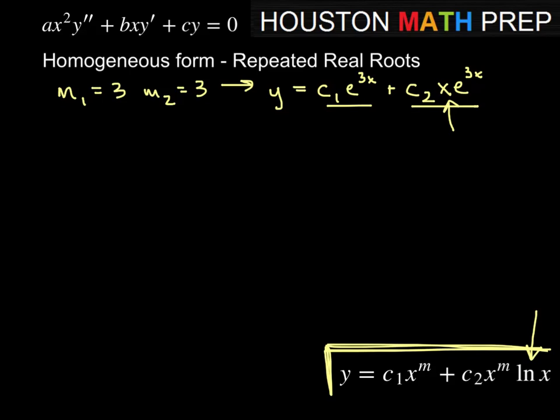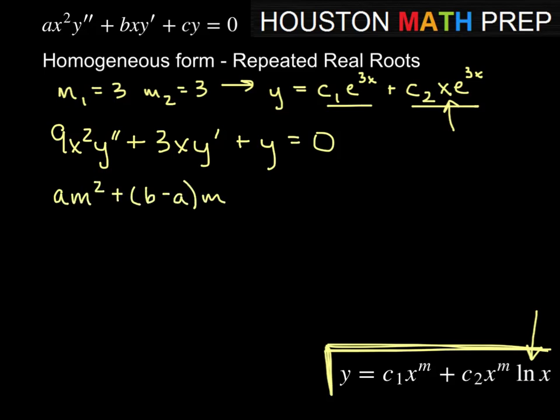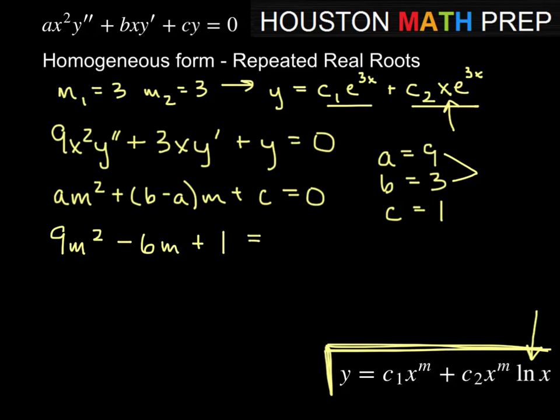Let me give you an example. Let's try 9x squared y double prime plus 3xy prime plus y equal to zero. In this one, remember the form is am squared plus b minus a times m plus c equal to zero. Here a equals 9, b equals 3, c equals 1. So our auxiliary equation would be 9m squared, b minus a is 3 minus 9, which is negative 6, so we'd get minus 6m plus 1 equal to zero.